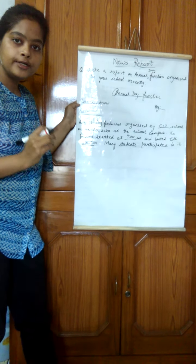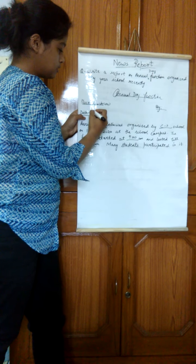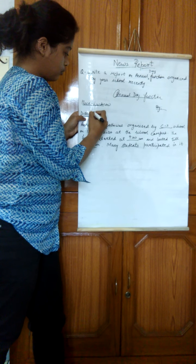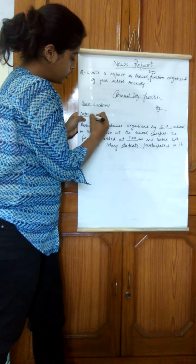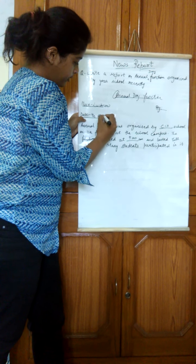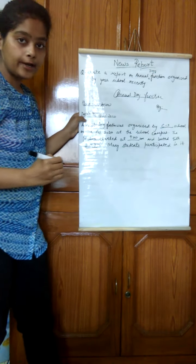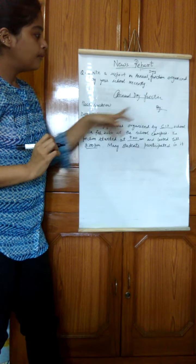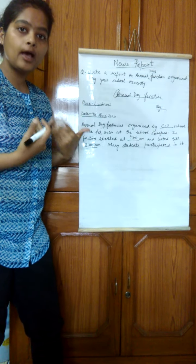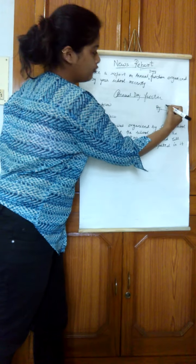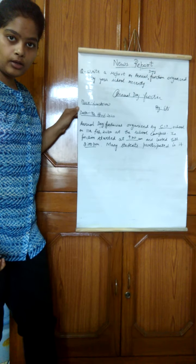Then write your date when you are writing the news report. Suppose I'm writing on 4th April — it should be written in that particular format only, and do write the year also. Then write by whom — the reporter's name. Since I am reporting it, my name will be there.